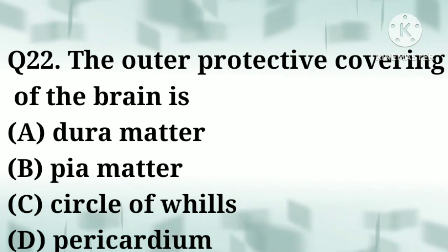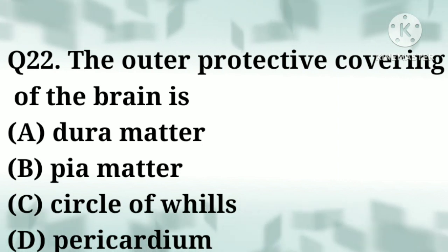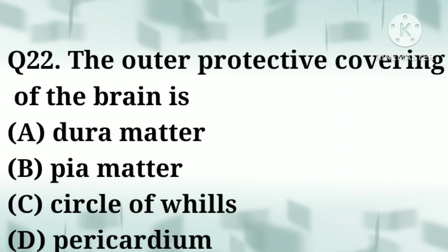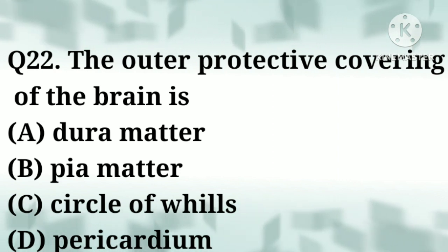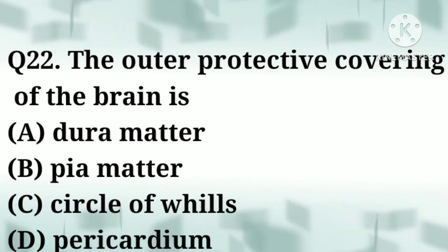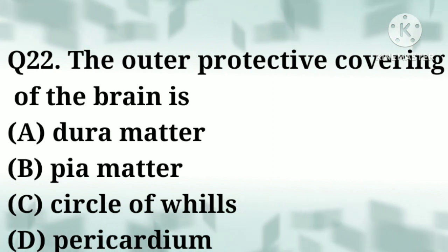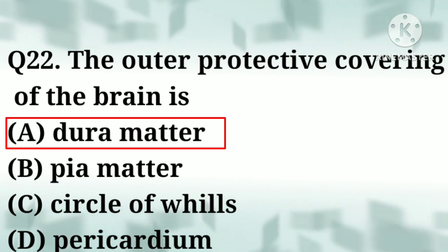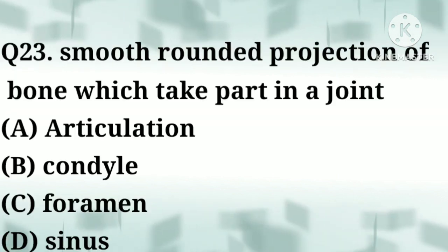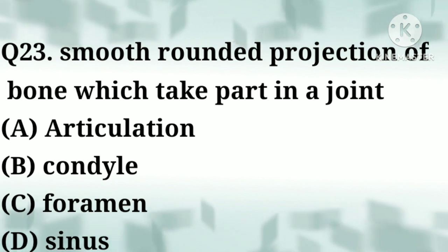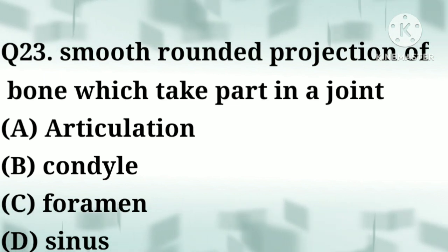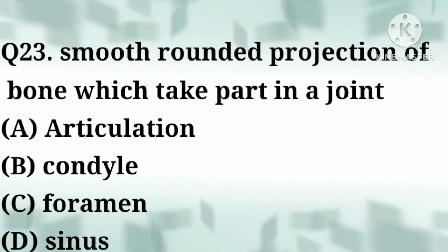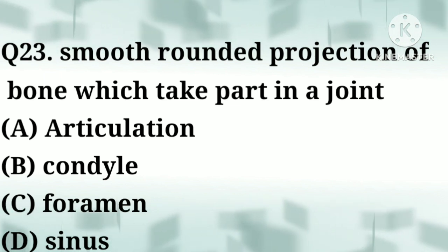Question number twenty-two: the outer protective covering of the brain is — option A: dura mater, option B: pia mater, option C: circle of Willis, option D: pericardium. Correct answer: option A, dura mater. Question number twenty-three: a smooth rounded projection of bone which takes part in a joint —  option A: articulation, option B: condyle, option C: foramen, option D: sinus.